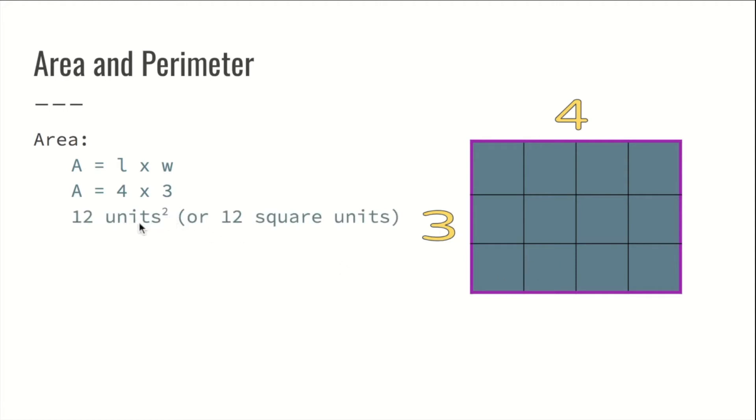Now we have to put this units with this 2 right there. That means squared because we're counting square units. Area is the amount of square units that fits inside. You see how many squares are in here? 12. We just said it. There's square units.